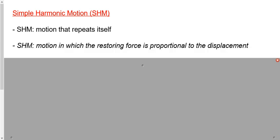It is motion that repeats itself, but the real definition of Simple Harmonic Motion is motion in which the restoring force — that's a force that pulls it back to where it started — is proportional to its displacement. As I pull a spring back, the further I pull it away from its equilibrium position, the bigger the force becomes. The restoring force is bigger as the displacement gets bigger, so the restoring force is proportional to the displacement.